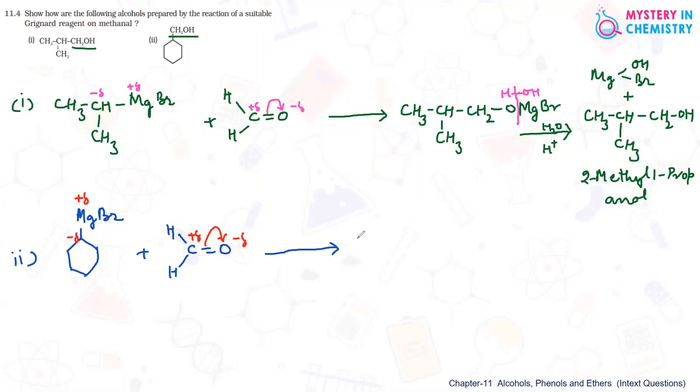By this the intermediate compound is formed. This ring is directly attached to CH2, then O-MgBr is the intermediate compound formed. After that, again acid hydrolysis - reaction with water in presence of acid.